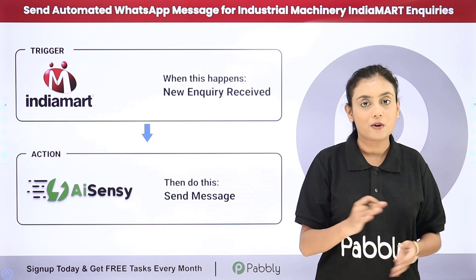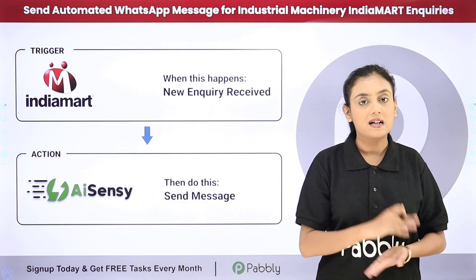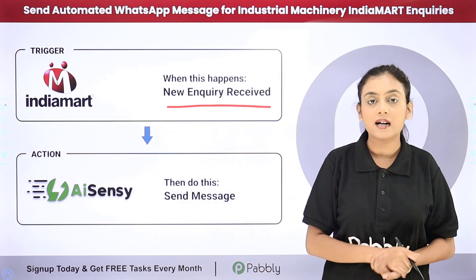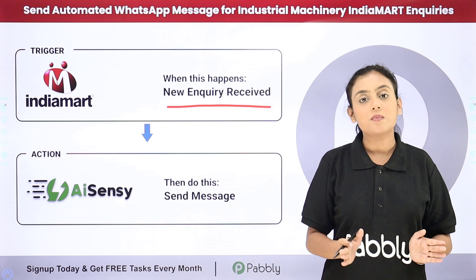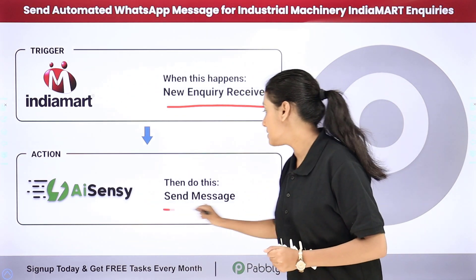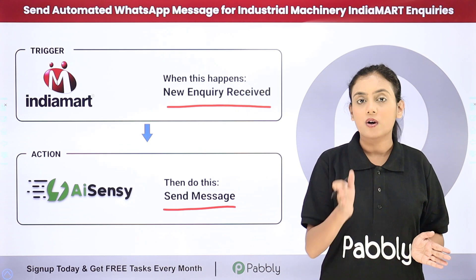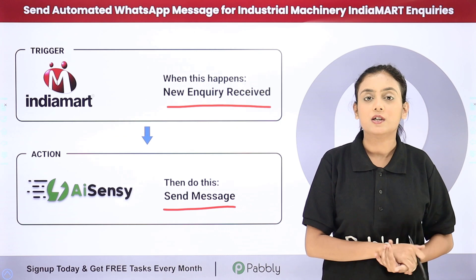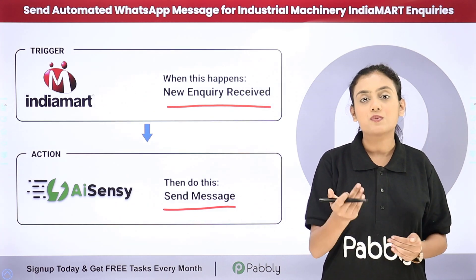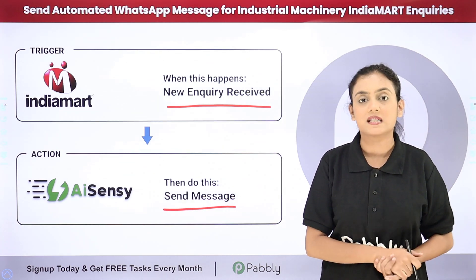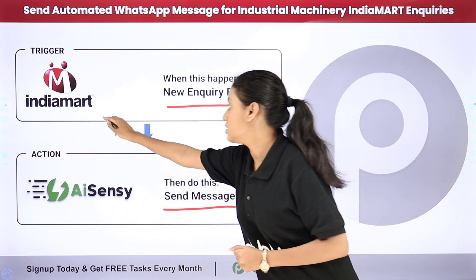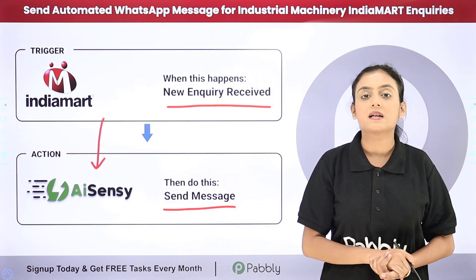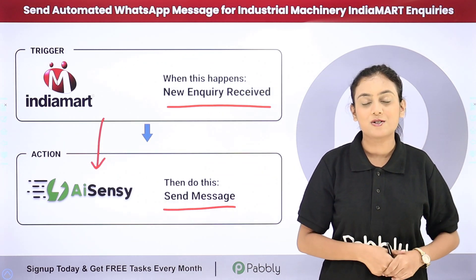In this automation, whenever any of my potential customers generates a new lead with the help of IndiaMart and we receive the inquiry, automatically a WhatsApp message is going to be forwarded to the lead. We are going to send the WhatsApp message with the help of WhatsApp by AiSensy, as I have created a message template using that. If you want, you can use Vati or Interact to create your own message template. We are going to create an automation between IndiaMart and WhatsApp with the help of Pably Connect.